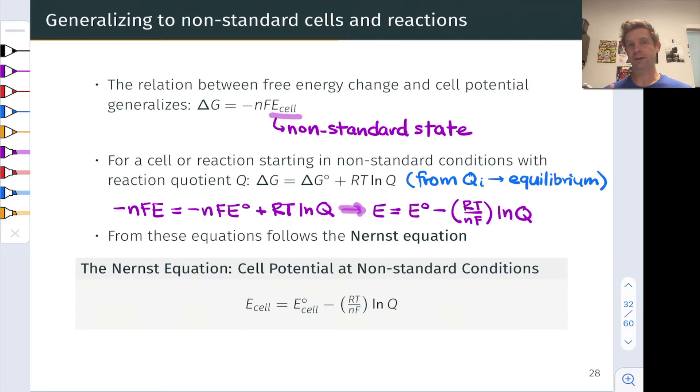Now what does the Nernst equation tell us? Well when Q is equal to 1 that corresponds to a cell in its standard state and so E cell there is simply equal to E naught cell, this is exactly what we would expect.